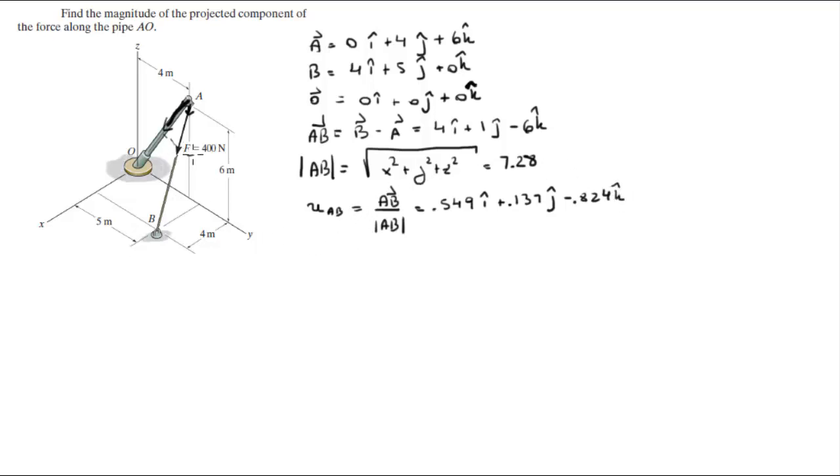Now you're going to get that this unit vector is equal to 0.549i plus 0.137j minus 0.824k. If you wanted to find the Cartesian vector form of the force, which is what we need to do, you know that its magnitude is 400 so the Cartesian vector form is given by multiplying its magnitude by the unit vector going along the force, which is unit vector AB, which is equal to 400 times these three values and it comes out to be 220i plus 55j minus 330k.